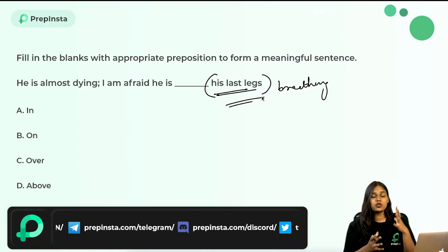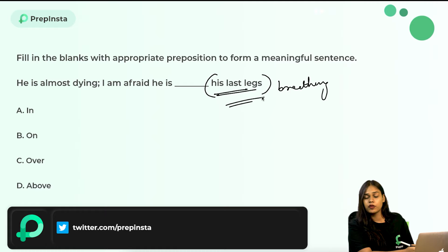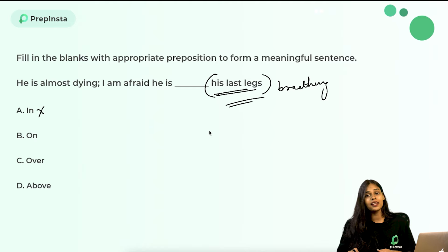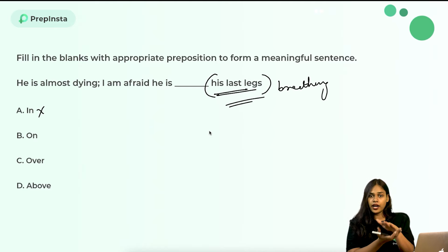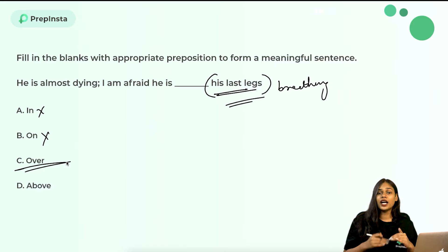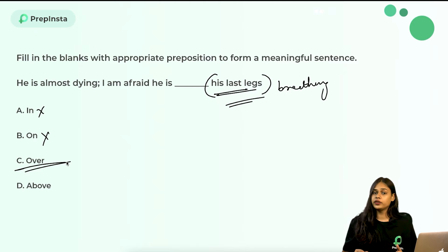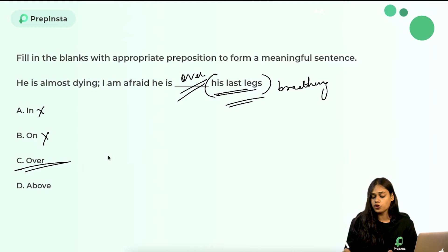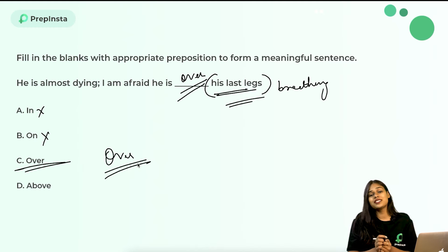We cannot use 'in' because it doesn't sit right with the metaphorical term 'his last legs.' 'On his last legs' doesn't work because you cannot be on your legs. However, 'over' implies overlapping — one leg over the other — meaning you're going to fall and tumble, signifying the end. So 'he is almost dying, I'm afraid he is over his last legs' — the answer is option C: 'over.'